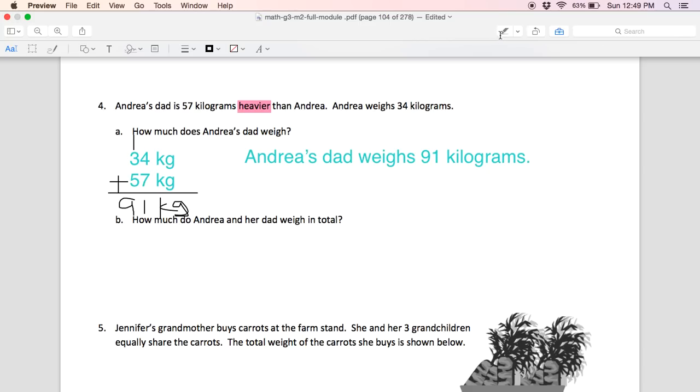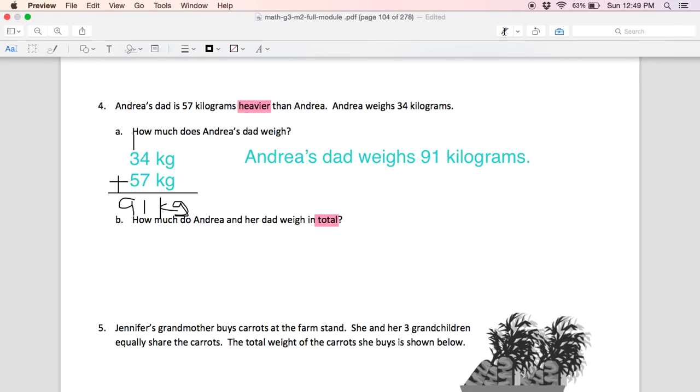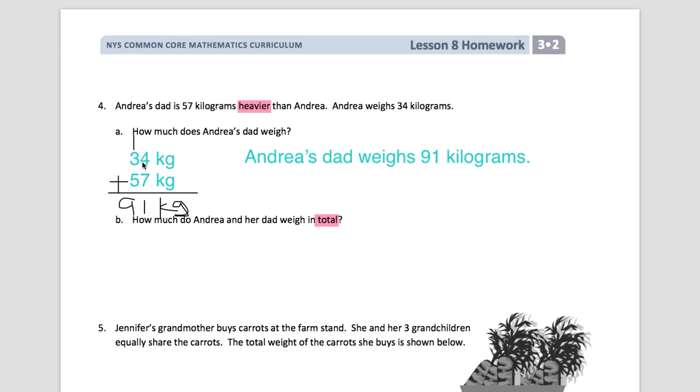Here is my clue word. Total. Let's look back at our two weights. We have 91 kilograms is how much her dad weighs and Andrea weighs 34 kilograms. Those are two different numbers. They're not equal groups. So I am not going to multiply to find the total.